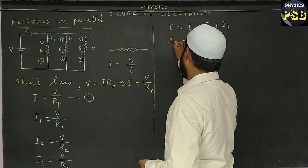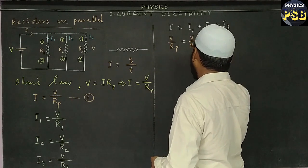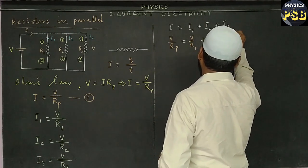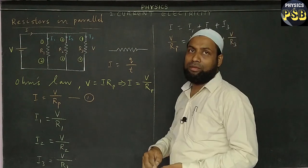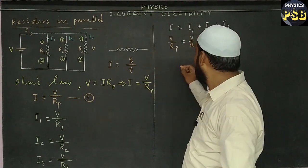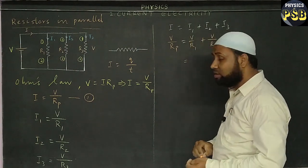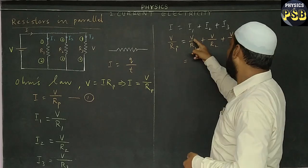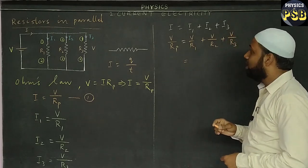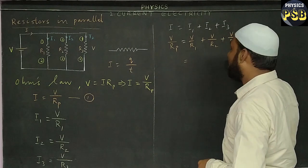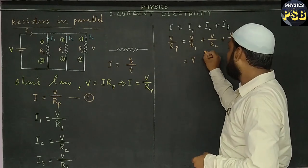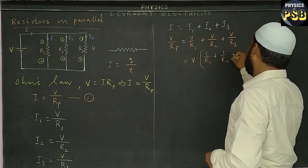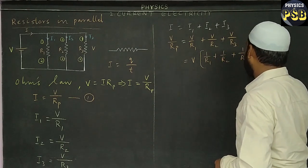I equals to V upon RP, I1 equals to V upon R1, I2 is equal to V upon R2, and I3 is nothing but V upon R3. Now I take the common term outside. Here V is the common term in all three parts of this equation. So I take it out. When I do so, I write 1 upon R1 plus 1 upon R2 plus 1 upon R3 within brackets.